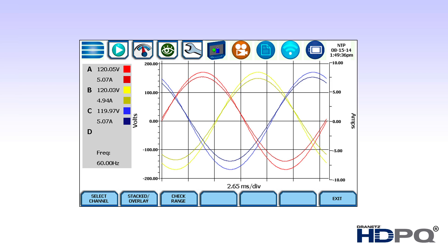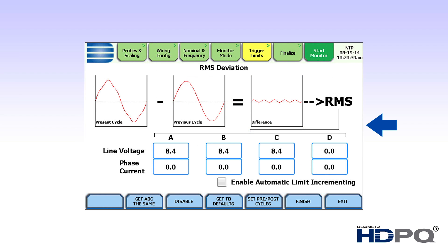The Dranitz HTPQ Family User Interface is divided into three major areas. At the top, you'll find taskbar icons, which includes quick and easy access to major instrument functions, as well as information on the instrument status. The center of the user interface is the work area that displays the data, events, setups, or other information that you've selected to be displayed.